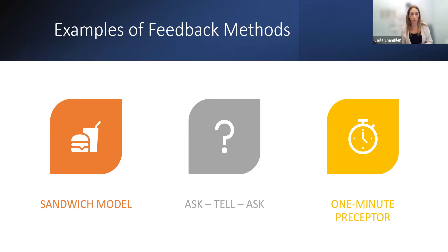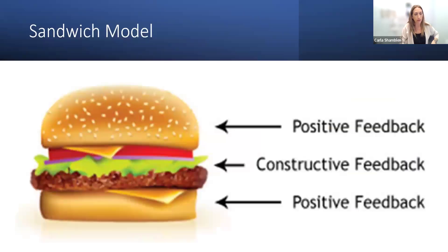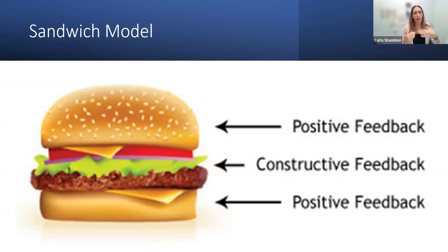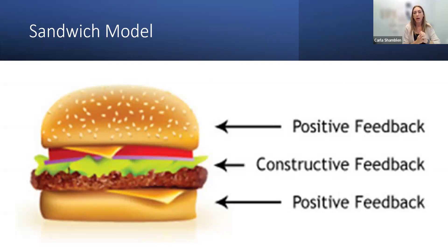I really like the sandwich model for its simplicity and ease of remembering. You give some kind of positive feedback to the student, layer that with some constructive feedback, and then end with positive feedback again. It's easy to pick at least two things they did well and at least one item of constructive feedback. One pitfall, though, is that sometimes it's easier for students to remember the positive, since that's what the preceptor led with and concluded with. This might be better for a beginner student or earlier in their clinical learning — very easy to remember, but probably not as effective as the other methods we'll discuss.